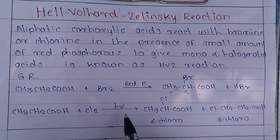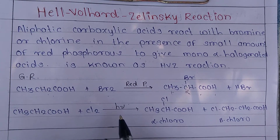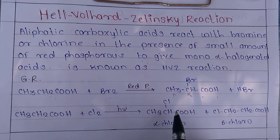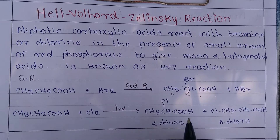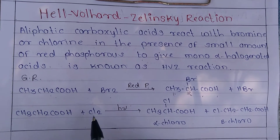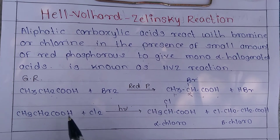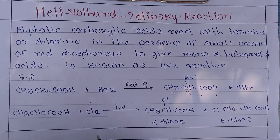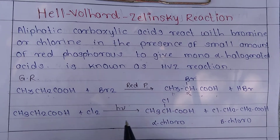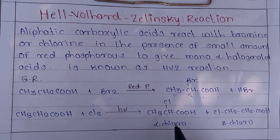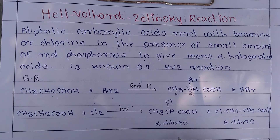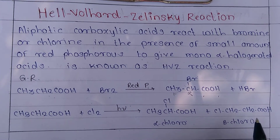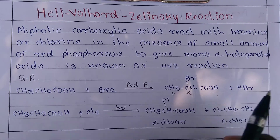Chlorine reacts similarly, but the reaction is less specific due to free radical chlorination. Chlorine forms two products: the first is alpha-chloropropionic acid and the second is beta-chloropropionic acid.